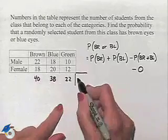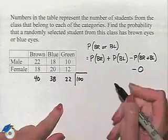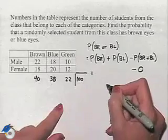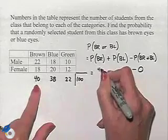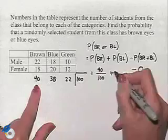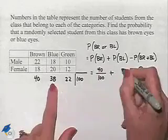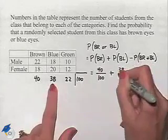So the probability of choosing someone with brown eyes is going to be 40 out of 100. The probability of choosing someone with blue eyes will be 38 out of 100.